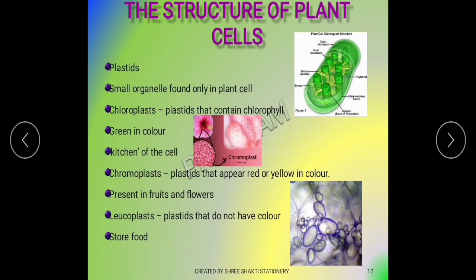Chromoplast — chromo means colorful. Chromoplasts appear red or yellow in color and they contain colored pigments. The red color and yellow color seen in leaves, fruits, and flowers that are of different colors is due to chromoplasts.